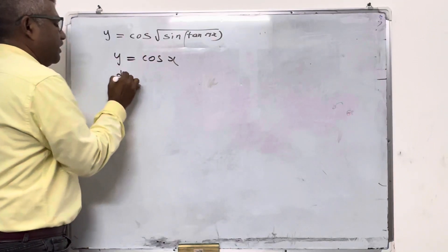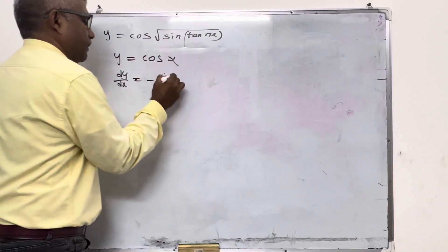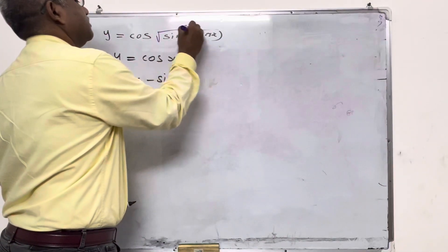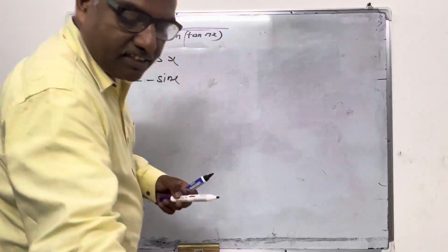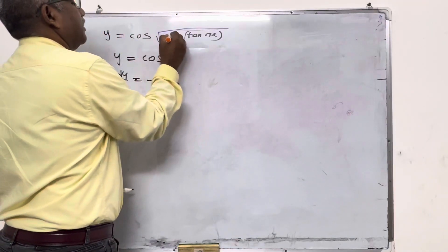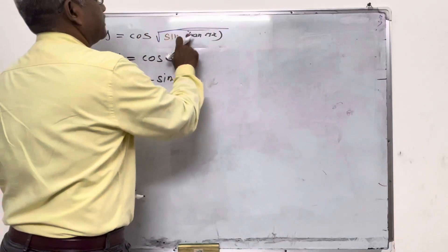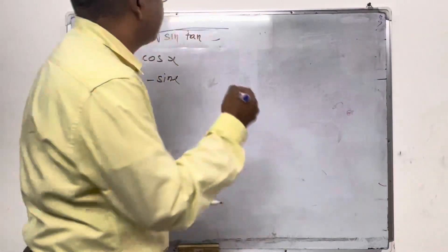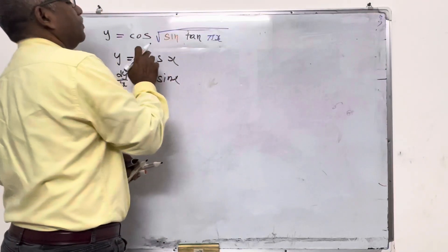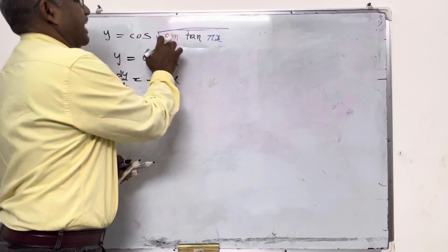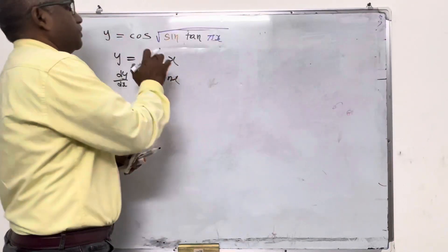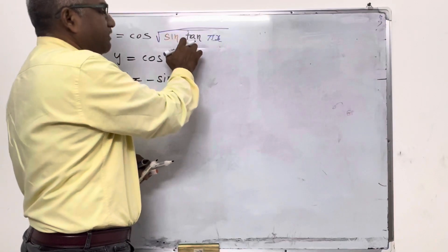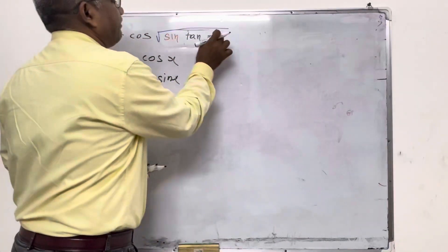If you differentiate cos x, d by dx gives minus sine x — very simple. But here the problem is: first, square root is there; second, sine is there; third, tan is there; fourth, pi x is there. So we have to address these four layers: square root, sine, tan, and pi x.